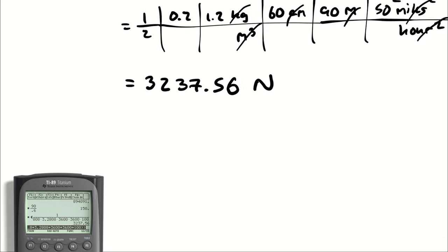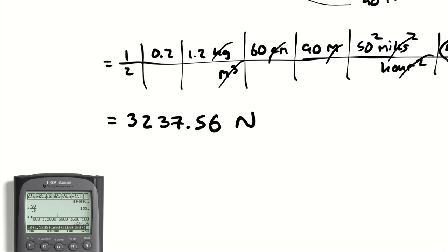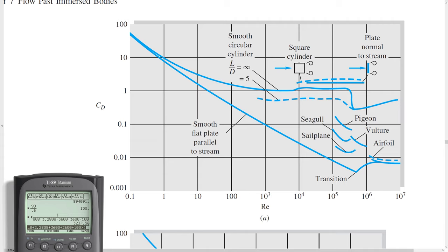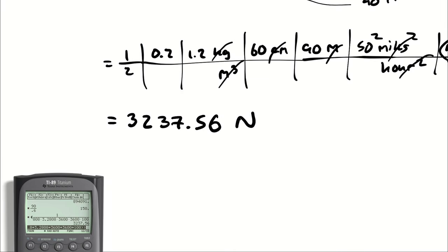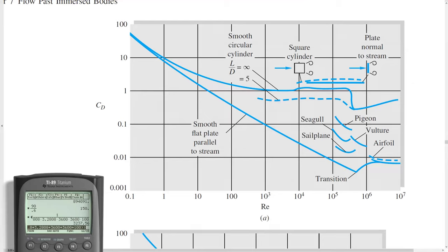Now how confident are we in that number? Well, keep in mind that we are reading a coefficient of drag off of a chart with a lot of wiggle room. If we had 0.3 instead of 0.2, that would increase this drag by 50%. And that's difficult to see. The demarcation between 0.2 and 0.3 is going to be pretty difficult on a chart like this. The best thing to do would be to get the actual experimental data and build the correlation ourselves. But this is what we have for the moment.